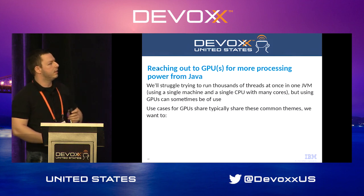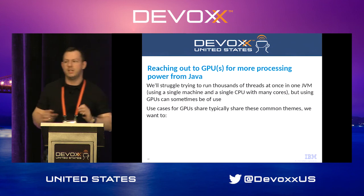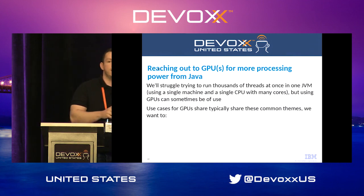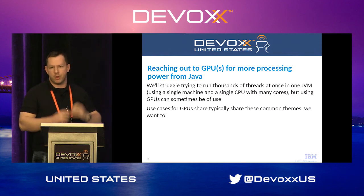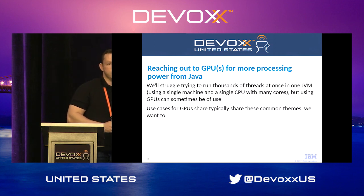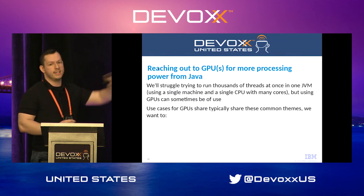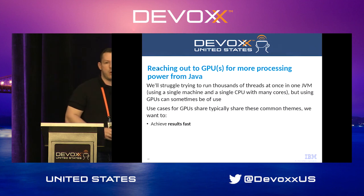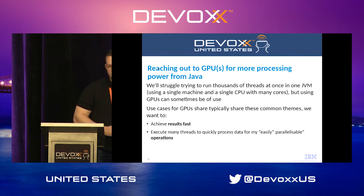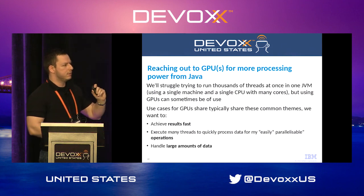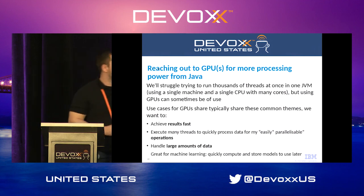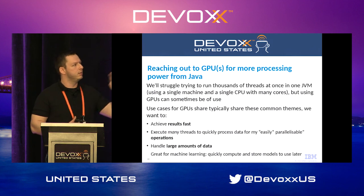What we can do is use GPUs to launch loads and loads of threads at once if you've got the hardware — you can't run 50,000 threads at once on a laptop. The use cases share common themes: machine learning is hot right now, and what we want is to create models as quickly as possible. We want real-time model creation or real-time use of those models for predictions. GPUs are a really good fit for machine learning. You want to execute as many threads as possible, but only for certain operations.